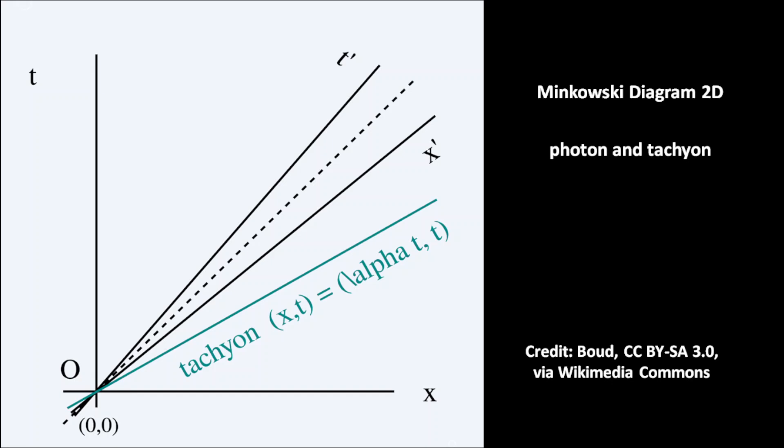A Minkowski diagram is a two-dimensional spacetime diagram with one space and one time dimension. This is how the Minkowski diagram for a tachyon would look like. The dotted line shows an object moving at the speed of light.